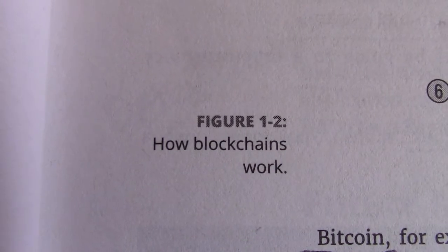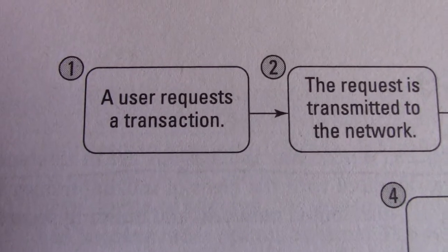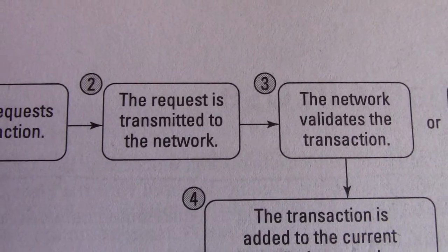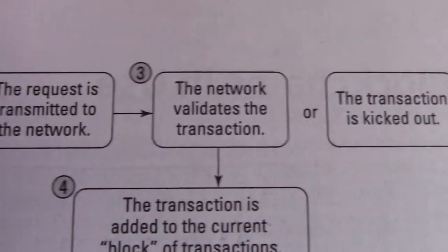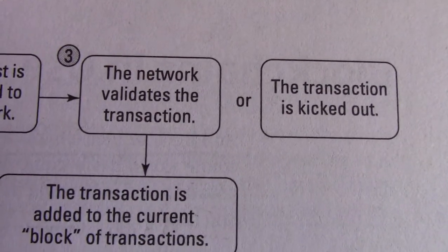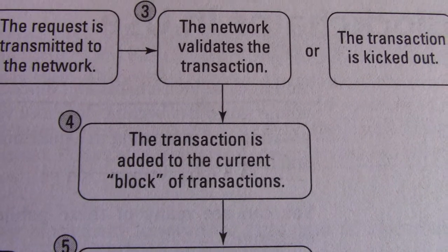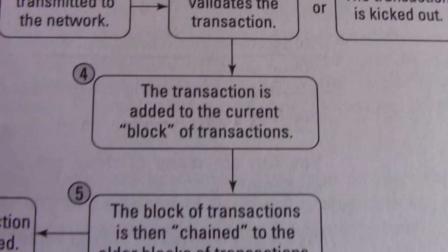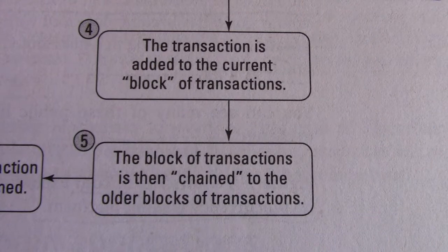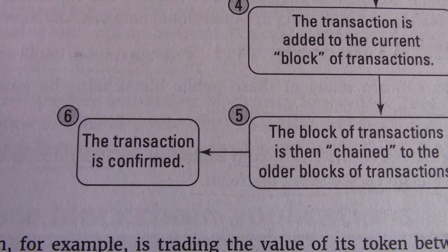How blockchains work. A user requests a transaction. The request is transmitted to the network. The network validates the transaction, or the transaction is kicked out. The transaction is added to the current block of transactions. The block of transactions is then chained to the older blocks of transactions, and the transaction is confirmed.